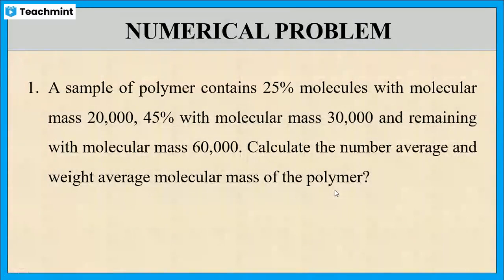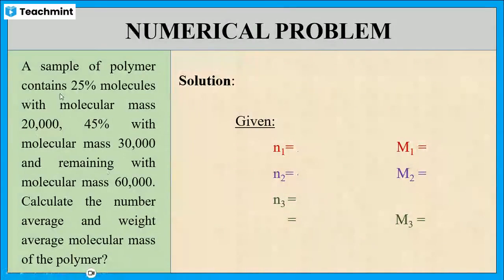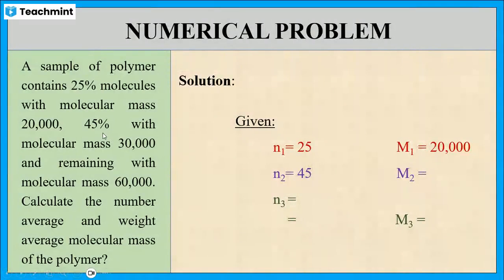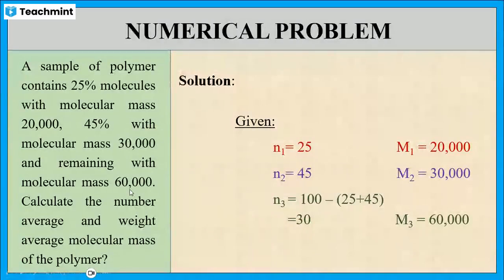Now let us solve this problem. First, let us list out the given data. N1 is 25 and its M1 is 20,000. Similarly, N2 is 45 and its M2 is 30,000. But N3 is not given — it is mentioned as the remaining percentage. That means we have to subtract the first two from 100: 100 minus (25 plus 45) equals 30. And its M3 is 60,000, which is already given.